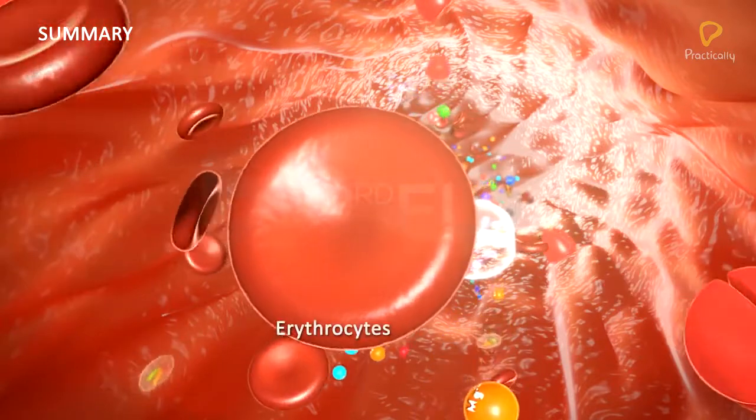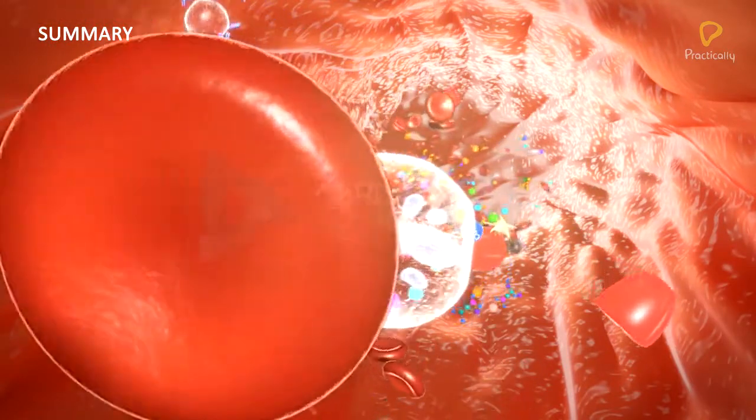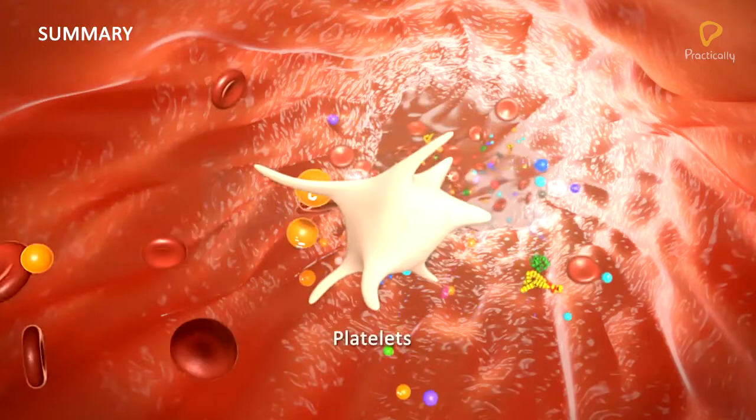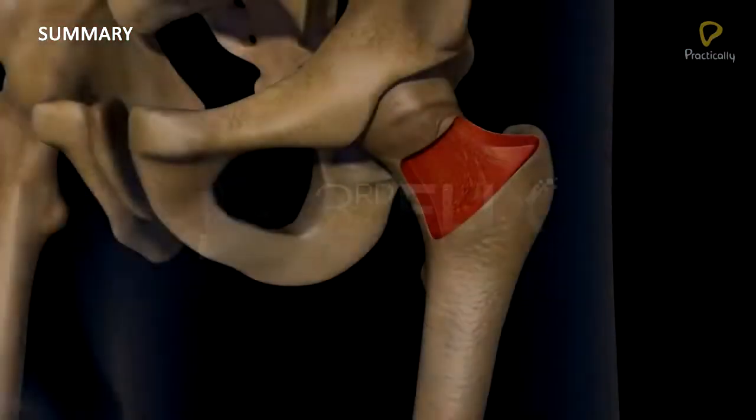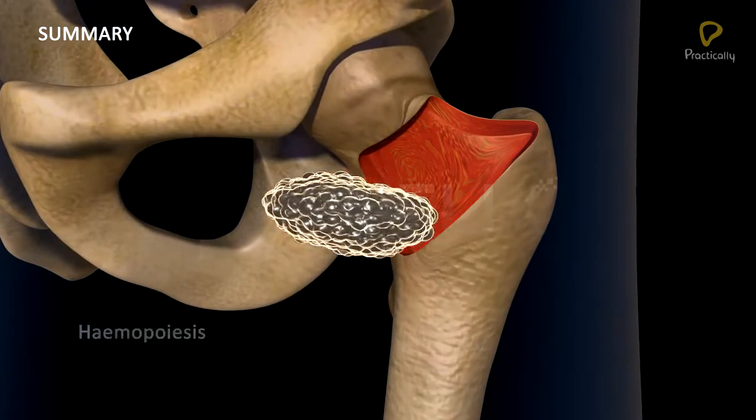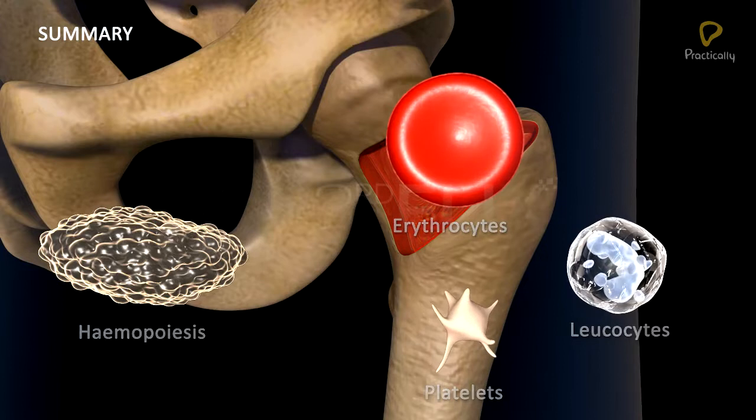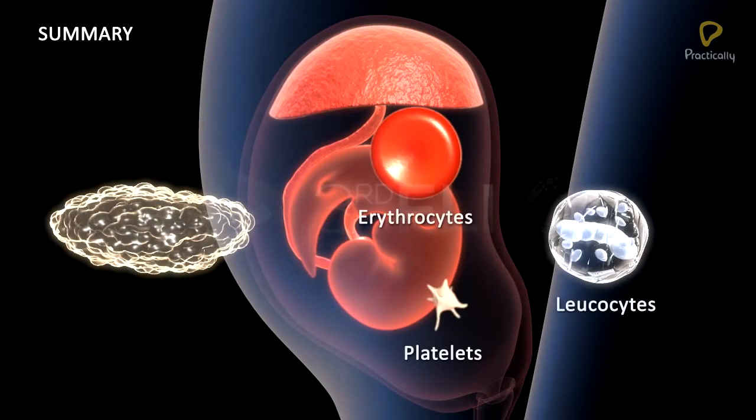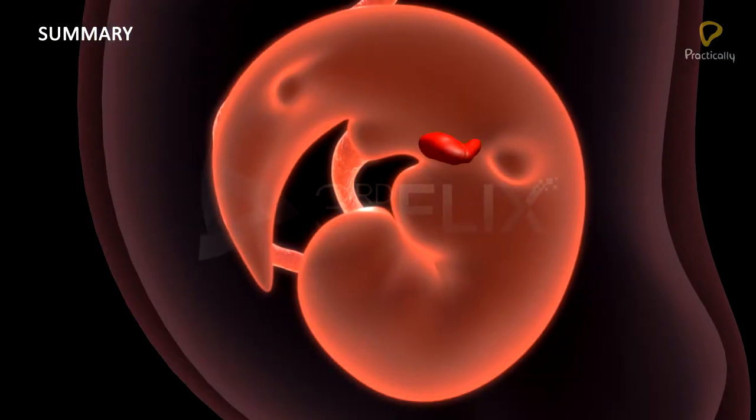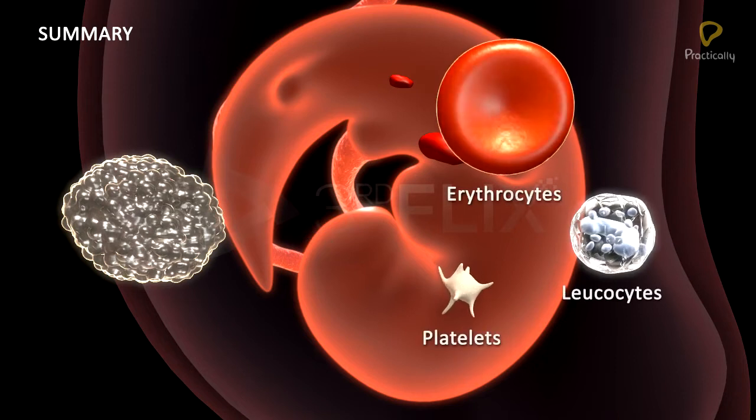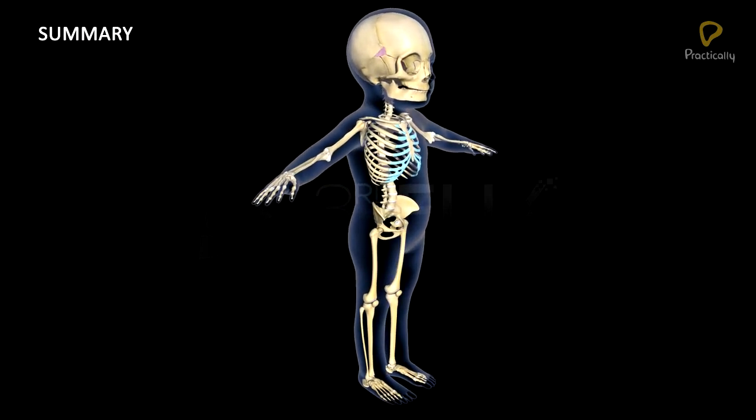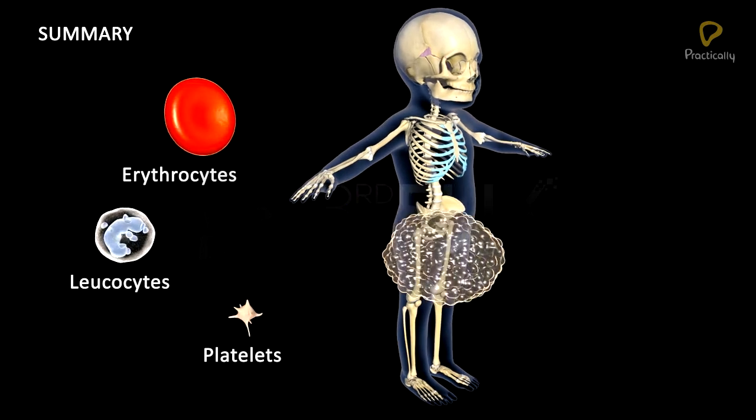Formed elements include erythrocytes, leukocytes, and platelets. The process of formation of blood cells is known as hemopoiesis. In the early stages of embryogenesis, blood cells are formed from the yolk sac mesoderm. Later on, the liver and spleen act as the hemopoietic tissues. In the final stages of embryonic development and after birth, the red bone marrow is the primary site of hemopoiesis.